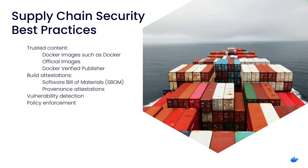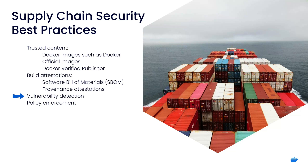In the context of containerized applications, software supply chain security best practices include using trusted Docker images, such as Docker Official Images and Docker Verified Publisher, generating build attestations such as Software Bill of Materials or SBOM, and provenance attestations, which describe what an image contains and how it was built respectively. And using tools such as Docker Scout to analyze your images, detect vulnerabilities throughout the various stages of the software supply chain during local development and CI/CD, and continuously monitoring for new vulnerabilities in the images in your container registry, and then finding and enforcing software supply chain policies for your artifacts.